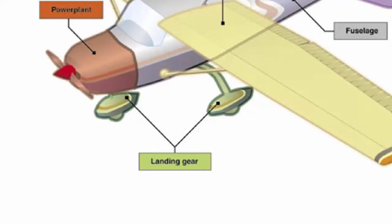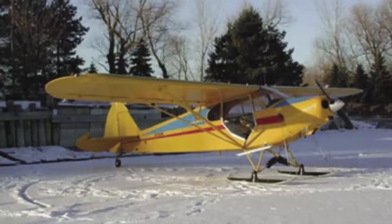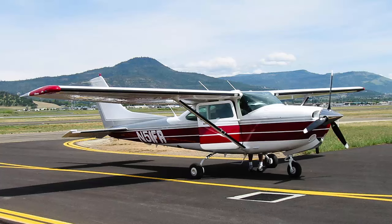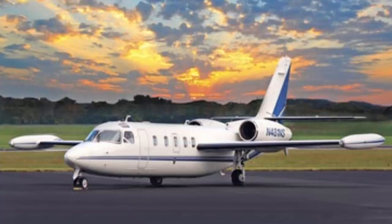The landing gear is the principal support of the airplane when operating on the ground, taking off, or landing. The most common type consists of wheels, but airplanes can also be equipped with floats for water operations or skis for landing on snow. The landing gear consists of three wheels — two main wheels and a third wheel positioned at either the front or rear of the airplane. A rear-mounted wheel configuration is called a conventional landing gear, sometimes referred to as tail wheel or tail dragger airplanes. When the third wheel is located on the nose, it's called a nose wheel and the design is referred to as a tricycle gear. A steerable nose wheel or tail wheel allows the airplane to be controlled while on the ground, with most aircraft steered by moving the rudder pedals.